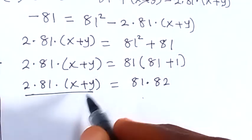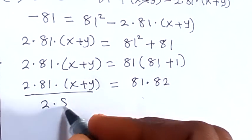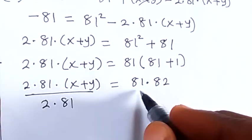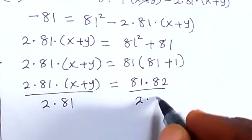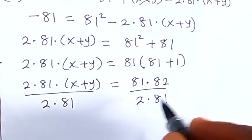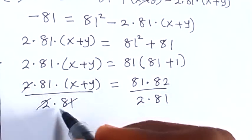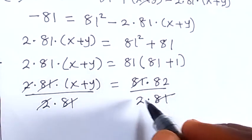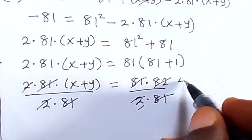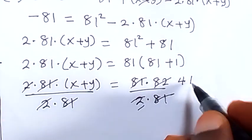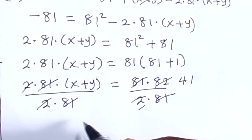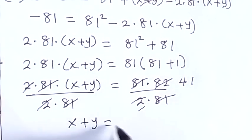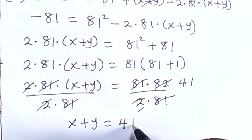So let's divide both sides by 2 times 81 to remove that factor. Here 2 cancels 2, and 81 cancels 81. We get 82 divided by 2, which is 41. And we can say from here that x plus y is equal to 41.